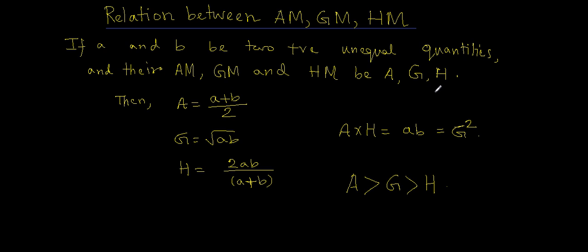then we know that arithmetic mean is given by A plus B by 2, geometric mean is given by root over AB, and harmonic mean is given by 2AB by A plus B.